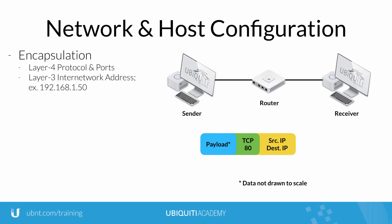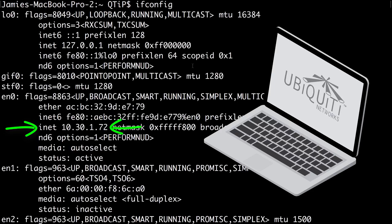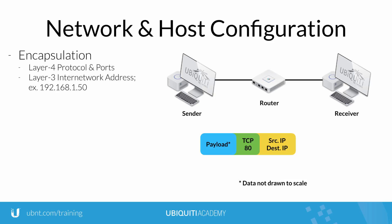At Layer 3, IPv4 and IPv6 addresses define the sender and receiver internet addresses. An IPv4 address is a logical 32-bit address used in local and internetwork communication. Inside the Layer 3 packet, a source and destination IP address exist to move traffic across networks.